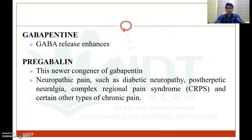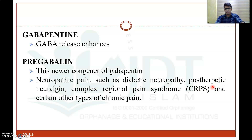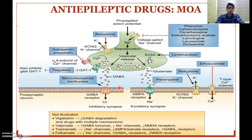The next class of drug is gabapentin, which is a GABA release enhancer. It increases the release of GABA (gamma-aminobutyric acid), an inhibitory neurotransmitter, thereby facilitating the inhibitory action of GABA. Pregabalin is a congener of gabapentin and is mainly used in neuropathic pain such as diabetic neuropathy, post-herpetic neuralgia, complex regional pain syndromes, and certain other types of chronic pain, along with its anti-epileptic action.